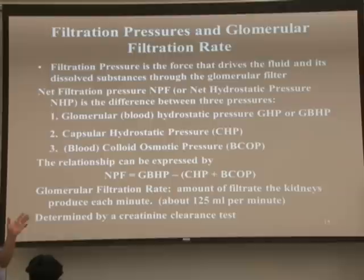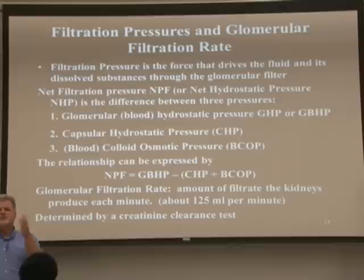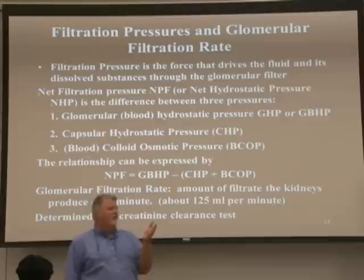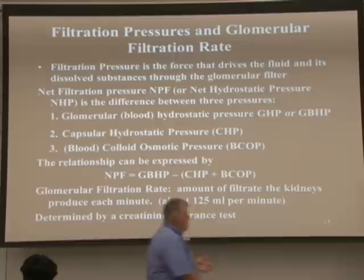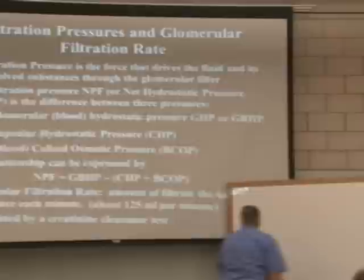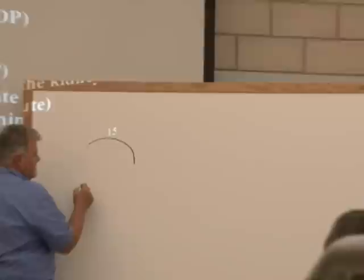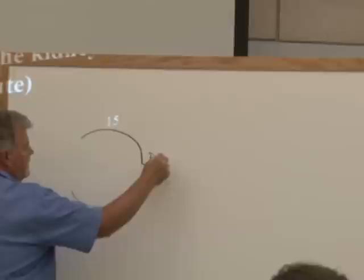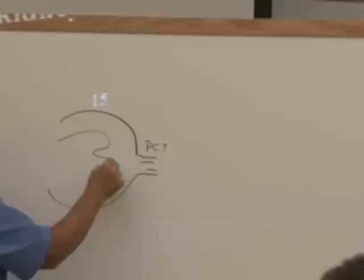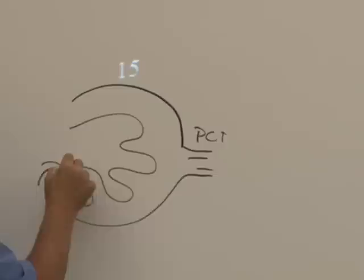Vets use this same approach with dogs and cats. Clinically, we can't directly measure pressures in the kidney — we'd have to insert little pressure readers into the kidney to determine what the pressures are. But we have indirect information that tells us what's going on. What we have is a membrane that acts as a filter. We have that renal corpuscle drained by the proximal convoluted tubule, and inside the renal corpuscle, we have the capillary bed we call the glomerulus.